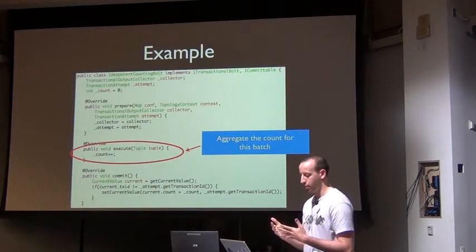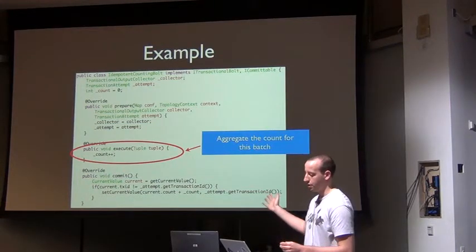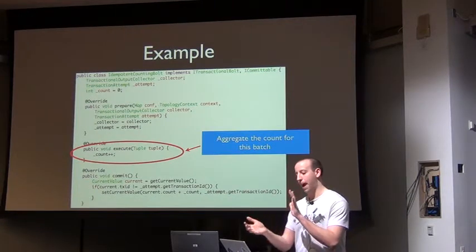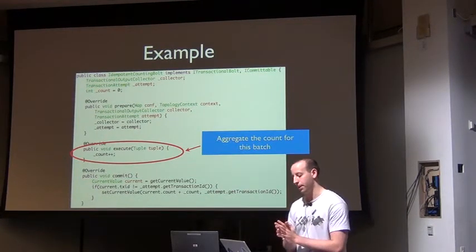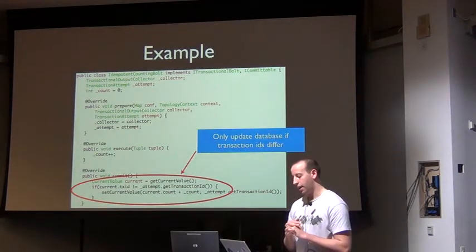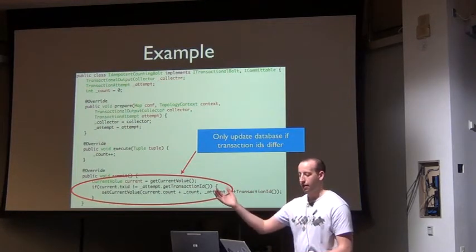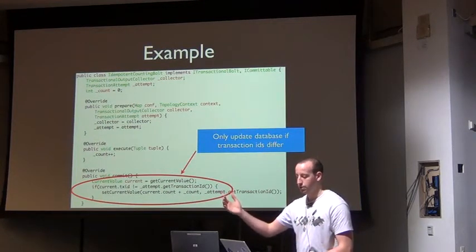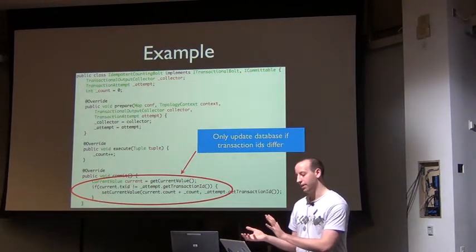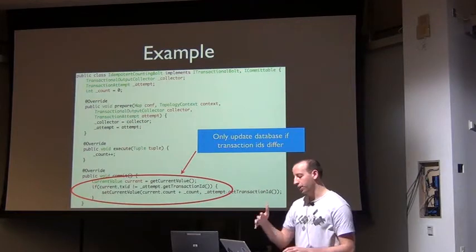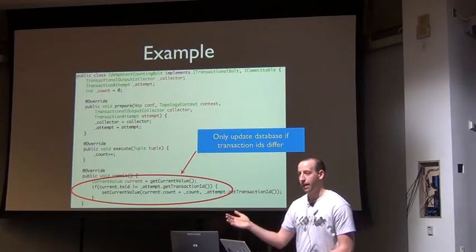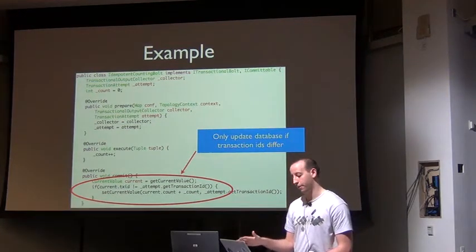The vault is parametrized with the transaction ID for the batch. You still process one tuple at a time, and what this does is maintain in memory the partial count for this batch for this portion of the computation. Rather than just blindly updating the count in the database, you actually store in the database both the count and the transaction ID.